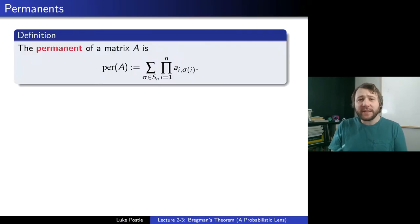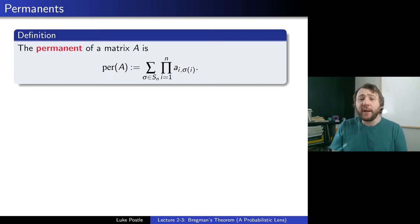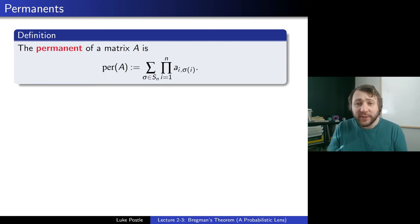What is Bregman's Theorem about? Bregman's Theorem is about permanents, the cousin of determinants. The permanent of a matrix A, denoted per(A), is the sum over permutations sigma in Sn of the product from i=1 to n of A_{i,sigma(i)}. That should be reminiscent of determinants, except there are no (-1) sign factors — everything is positive here.